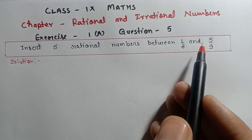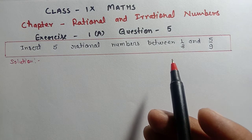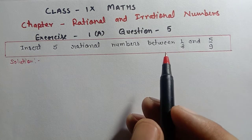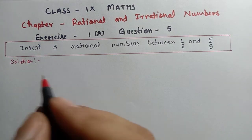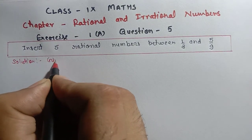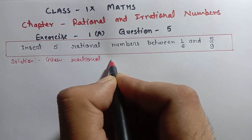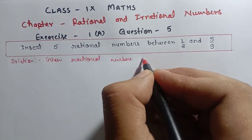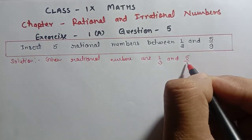हम यह जो 2 rational numbers given हैं, इनके between में 5 rational numbers insert करने हैं। बहुत easy है। अभी Question 4 में मैंने आपको सिखाया था कैसे हम यहाँ पर numbers को insert करेंगे। So let's calculate this also. Given rational numbers are 1/3 and 5/9.